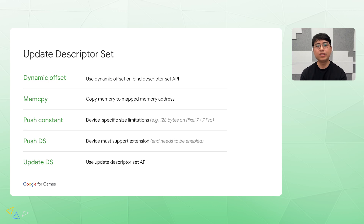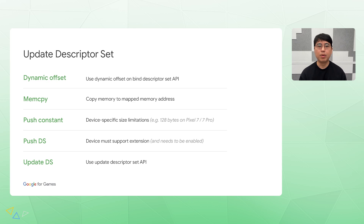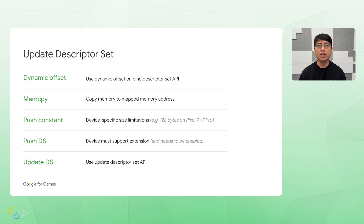In Vulkan, a descriptor set links buffer and texture data to a draw call. Object textures usually don't change between frames, but UniformBuffer data for an object might change every frame, so we will focus on UniformBuffer updates. There are many ways to update UniformBuffers, and we will test five different methods: using the dynamic offset in the BindDescriptorSet API, copying memory to a mapped memory address, using PushConstant, using the PushDescriptorSet extension, and calling the UpdateDescriptorSet API.